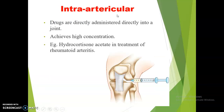The next route is intra-articular, where drugs are directly administered into a joint. Intra-articular means within the articular space, that is within the joints. It is a rarely used route. By this route, drugs achieve high local concentration — for example, hydrocortisone acetate in the treatment of rheumatoid arthritis.